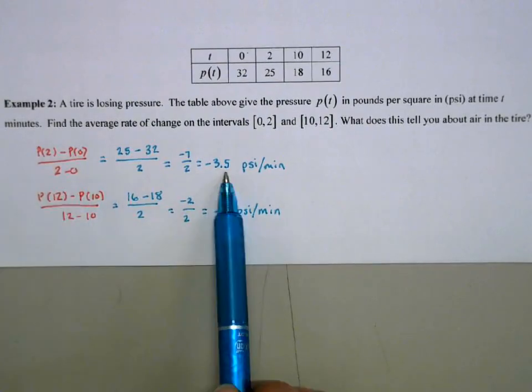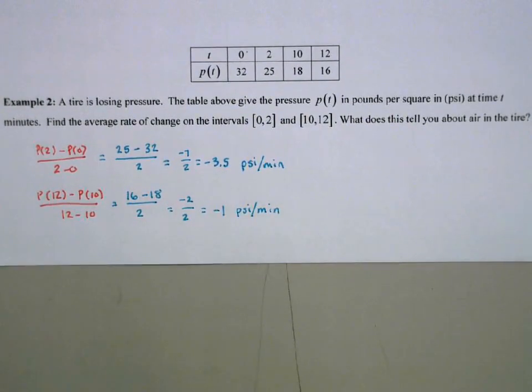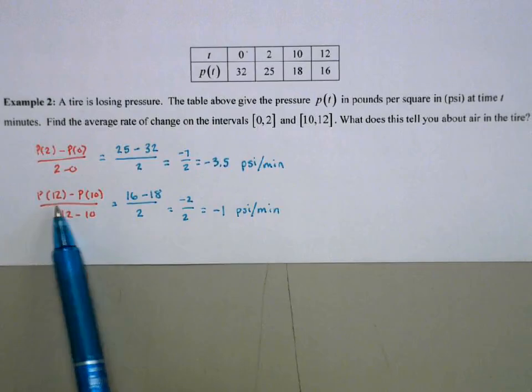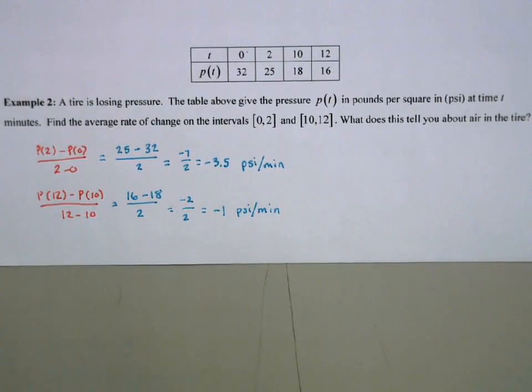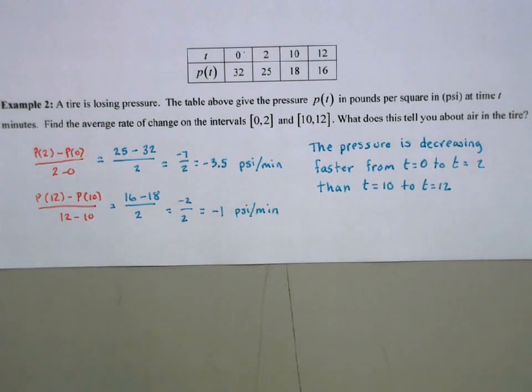So what this tells us is from 0 to 2, the pressure was dropping faster than it was from 12 to 10, which makes sense. As there's more pressure, the pressure is going to drop a lot quicker. As there's less pressure, it's still going to decrease, but it goes a lot slower. So the pressure is decreasing faster from 0 to 2 than it is from 10 to 12.